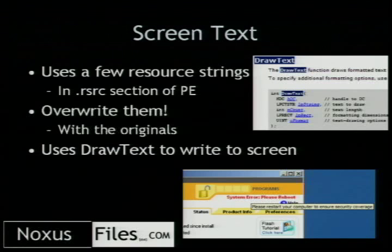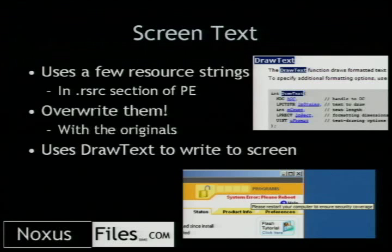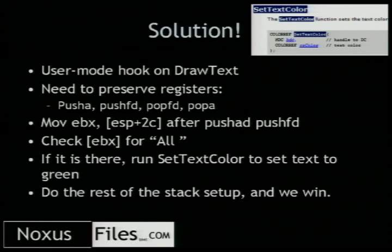The screen text uses a few resource strings in the .rsrc section of the Portable Executable. The PE is the format for exe files. We can see system error messages — we can just overwrite them with our own. It uses DrawText to write this to the screen — that's a GDI call, I believe it's in user32.dll. What we're going to do is have a user mode hook on DrawText, because we want to see whenever it's going to try to spit these messages out. We'll first preserve the program state using PUSHA/PUSHFD and POPFD/POPA — that saves the state of all registers and flags onto the stack.